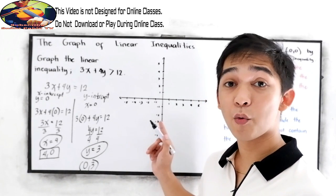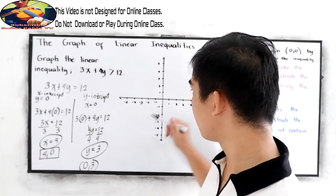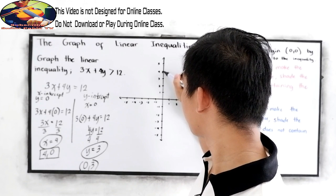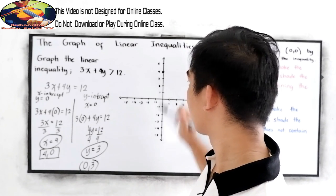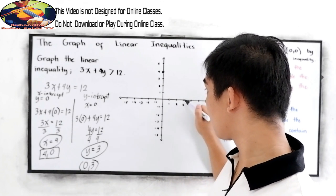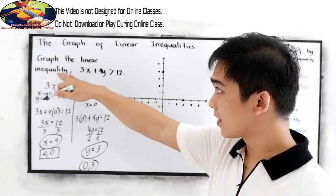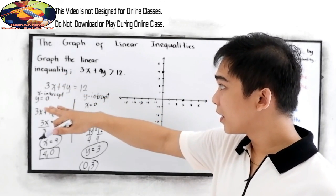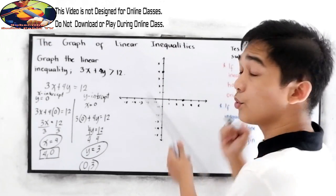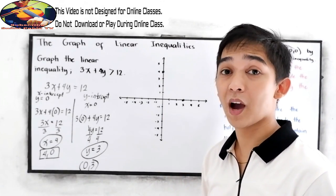If we're going to plot in our Cartesian plane: (4, 0) — 1, 2, 3, 4 — then (0, 3) is here on the y-axis. So in our equation, we're just going to connect the two points, and that will be our graph.